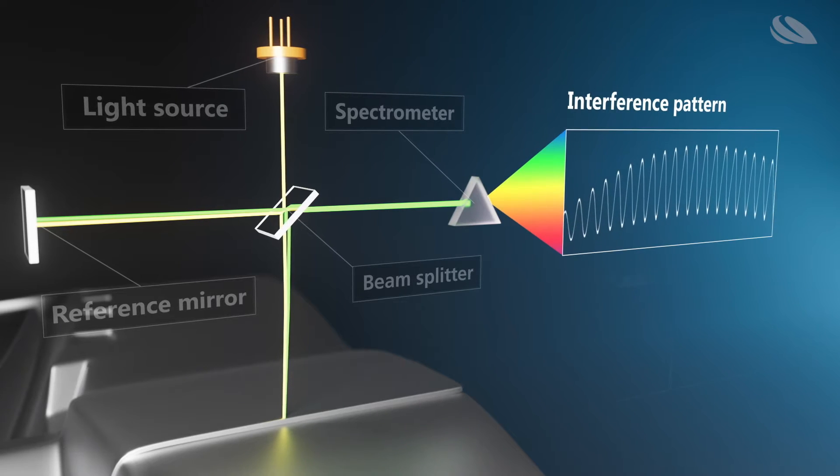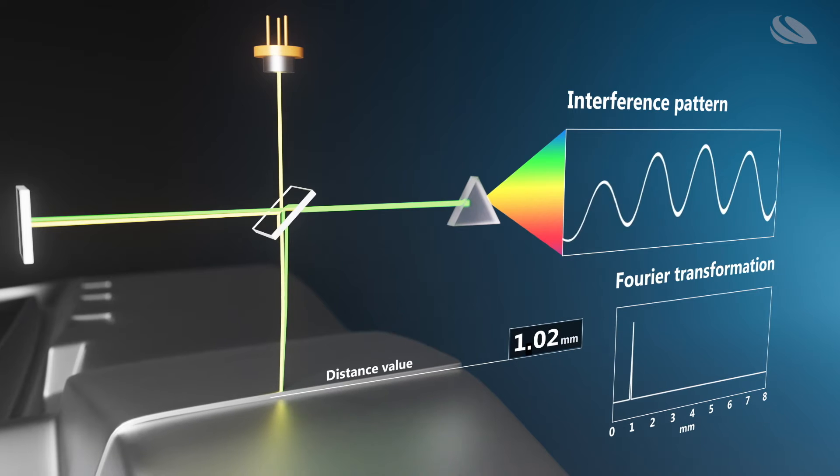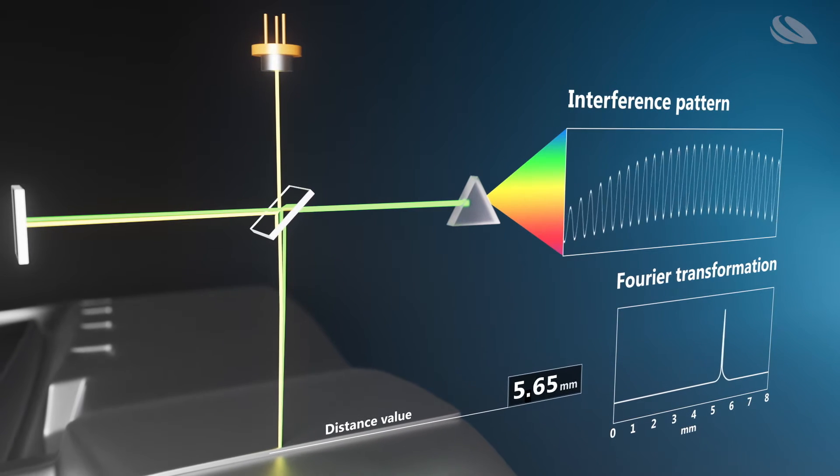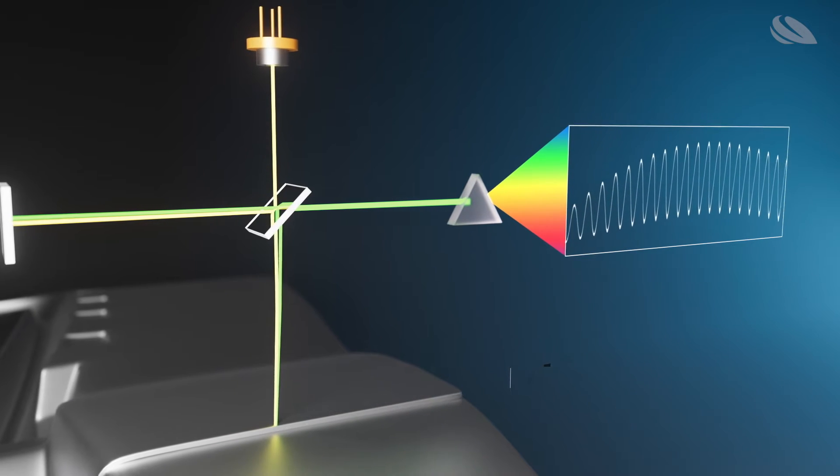The reflected light in both paths combine to form an interference pattern that is analyzed by the spectrometer, providing a precise distance signal with micrometer resolution and tens of thousands of measurements per second.